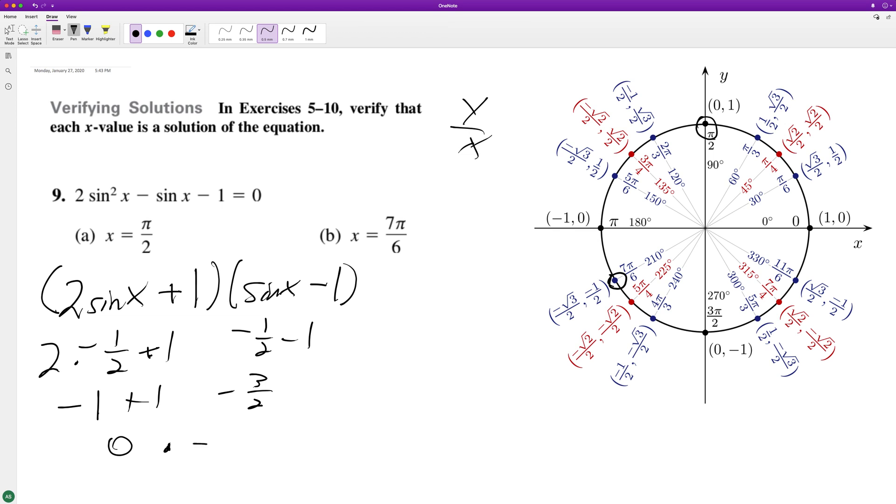Times negative three halves. Zero times negative three halves equals zero. So that verifies it for seven pi over six. And that's it.